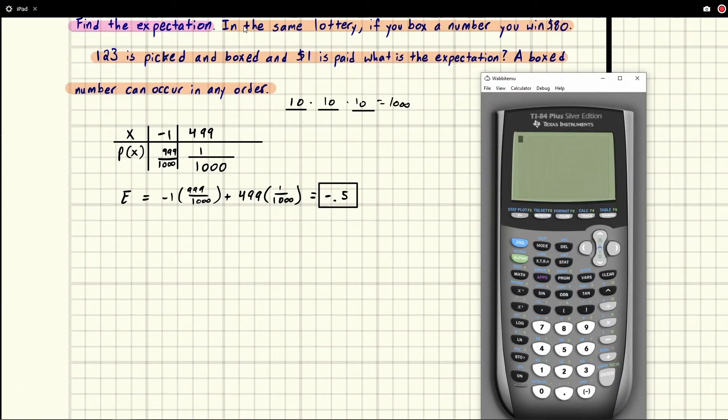All right, part B, in the same lottery, if you box a number, you win 80 bucks. So boxing is we're told at the end is a number can occur in any order to win. So it doesn't say to win, but it's implied. So if we have, for example, what do we pick, we pick 123. And we pay the buck to enter. So 123. And then we box it like this.